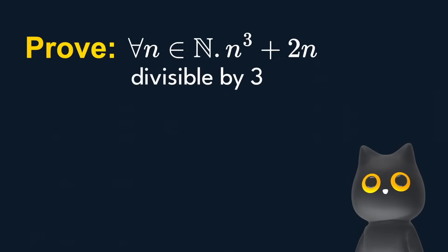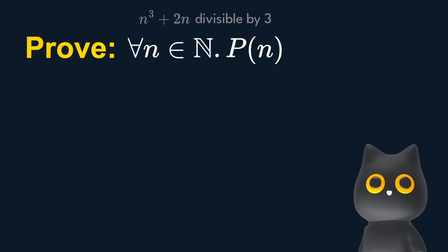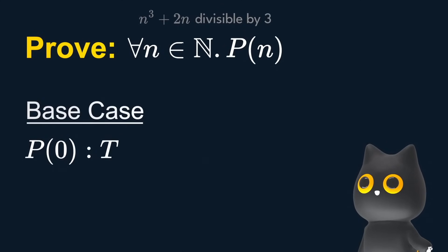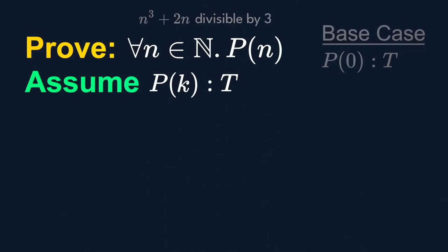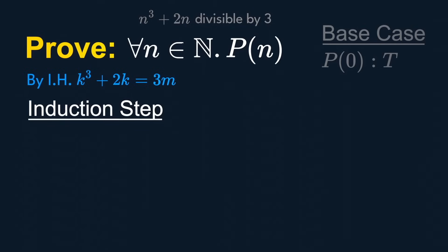For example, we want to prove that N cubed plus 2N is divisible by 3 for any non-negative integer N. Take this to be P(N), and for the base case N is 0, it is true. In our induction hypothesis, we assume that P(k) is correct. So k cubed plus 2k is divisible by 3. We can rewrite this idea as it being equal to 3 multiplied by some integer M.